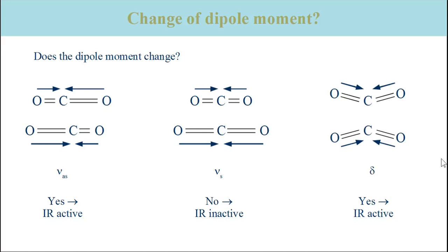The figure shows two extreme positions of the vibrations for the anti-symmetric stretching vibration, for the symmetric stretching vibration, and for one of the bending vibrations. The second bending vibration is the same movement but rotated by 90 degrees around a horizontal axis in the paper plane.